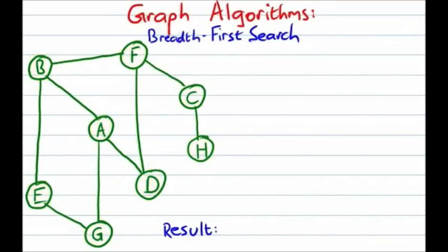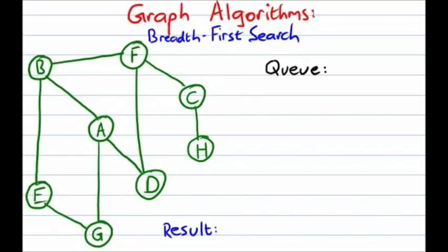For our next example, we're going to take a look at another graph algorithm — in this case, a breadth-first traversal. The major difference between a breadth-first traversal and a depth-first traversal is the use of a different supporting data structure: in this case, a queue. We're going to keep track of vertices that we still have to visit using a queue. Just like last time, we're going to start out at vertex A, so we're going to visit A and mark it as visited.